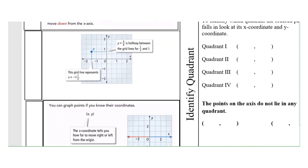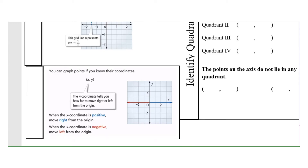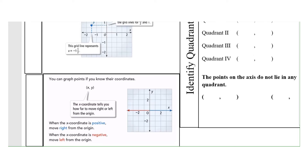We are still on page 193. The x-coordinate tells you how far to move right or left along the x-axis. If the x-coordinate is positive, you move to the right from the origin. If your x-coordinate is negative, you move to the left — just like positive numbers are to the right of zero and negative numbers are to the left on a number line. We're just putting two number lines together.